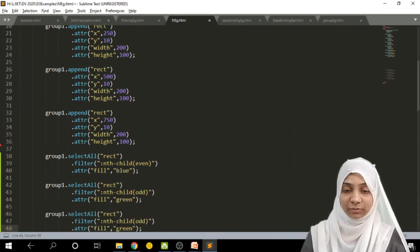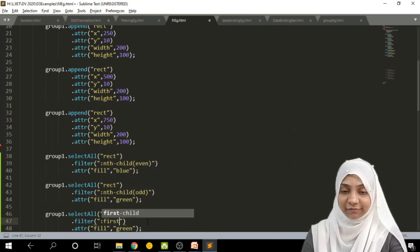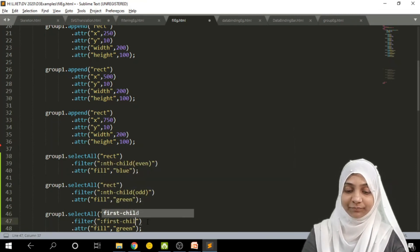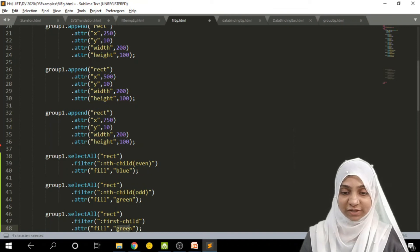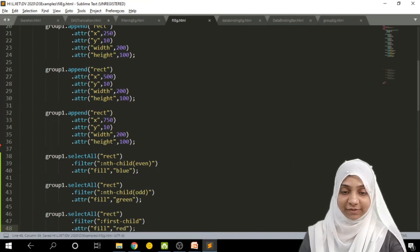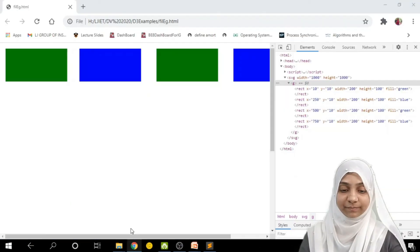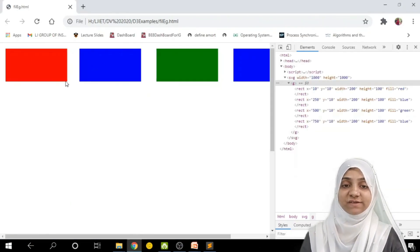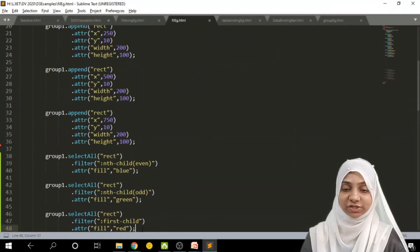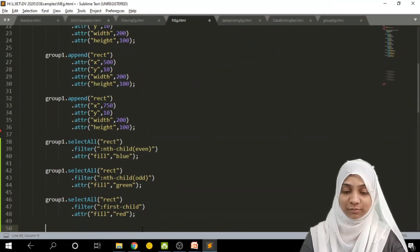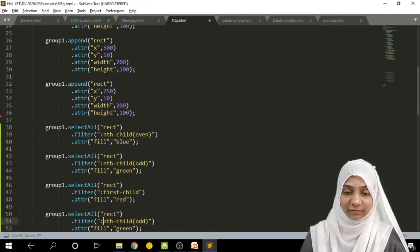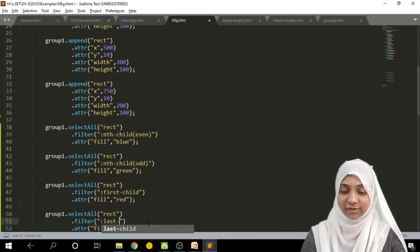I can also change the color of first and last child. Let me try this. I will write down instead of nth child, I will simply write first child. The first child I want is red in color. As you can see, first child is now red in color.